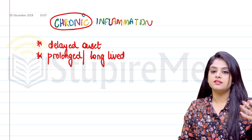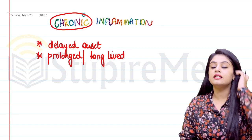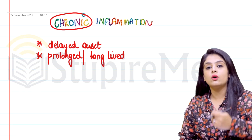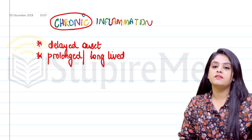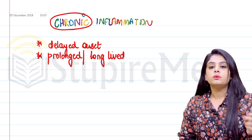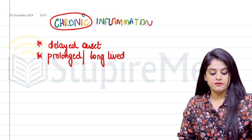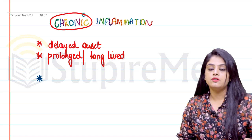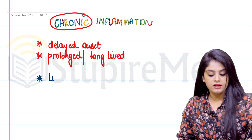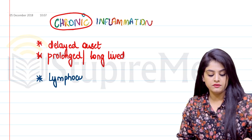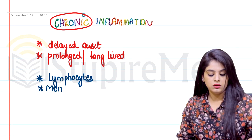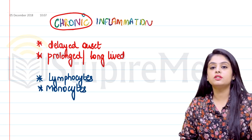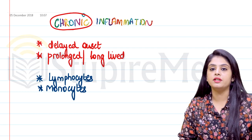So first, chronic inflammation will start off late — delayed onset. Second, it is going to go on for a very long period of time; it is long-lived or prolonged. The next point: what was the cell of chronic inflammation? The cells of chronic inflammation were the lymphocytes and the monocytes — these were the two main cells.